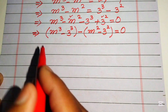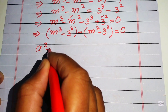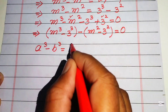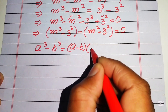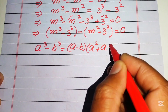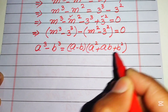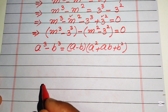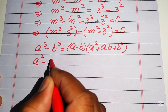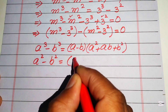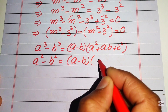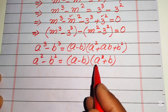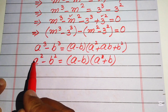We need two formulas. The cubic formula: a cubed minus b cubed equals (a minus b)(a squared plus ab plus b squared). For the second term we need the difference of squares formula: a squared minus b squared equals (a minus b)(a plus b). We apply the cubic formula to the first term and the difference of squares to the second term.